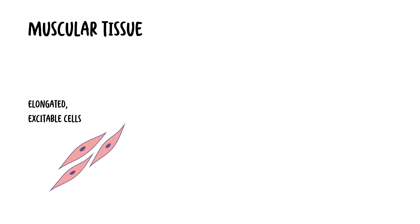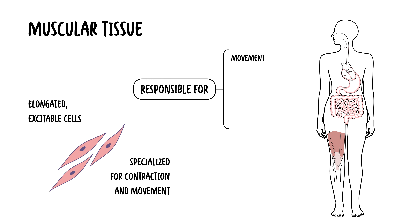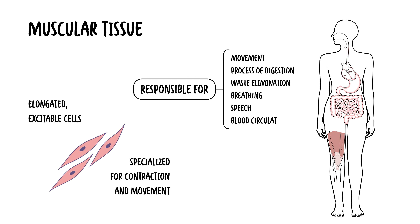Muscular tissue is composed of elongated, excitable cells that are specialized for contraction and movement. They are not only responsible for movement — muscle is also essential for the process of digestion, moving food down your gastrointestinal tract, waste elimination, breathing, speech, and blood circulation.